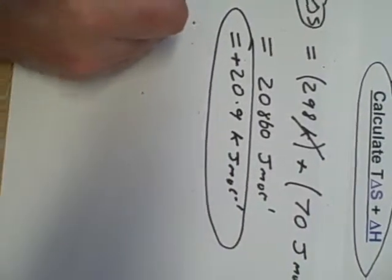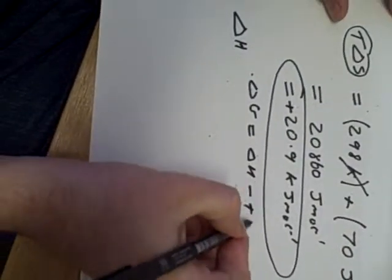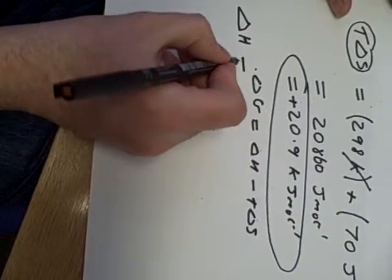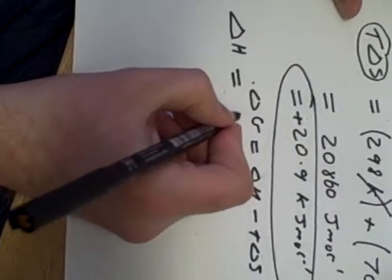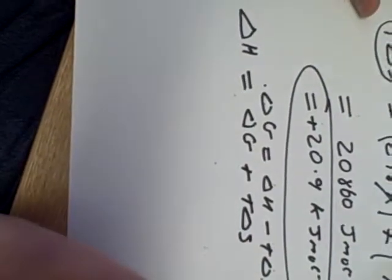Now we want delta H. There's that key equation once again, which is delta G equals delta H minus T delta S. So we rearrange that to make delta H the subject. Delta G plus T delta S.